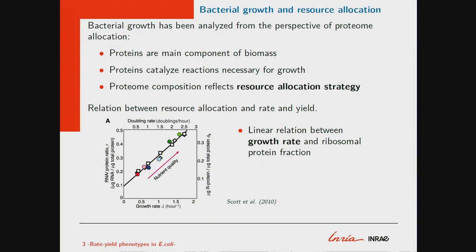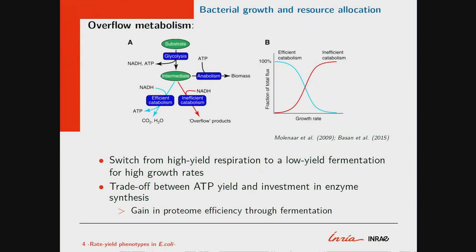Bacterial growth can be analyzed from the perspective of proteome allocation. The idea is that proteins are the main components of biomass and proteins catalyze all the functions needed for cell growth. So the way the proteome is partitioned across different functions reflects the resource allocation strategy of the cell. As we have already seen, there is a very tight relation between the growth rate and the fraction of ribosomal proteins.